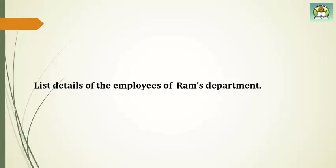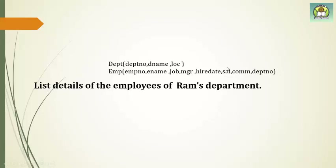The first example: list details of employees of RAM's department. We have to find the details of employees who are from RAM's department. The tables we are considering are department and employee. The department table has department number, department name, and location.